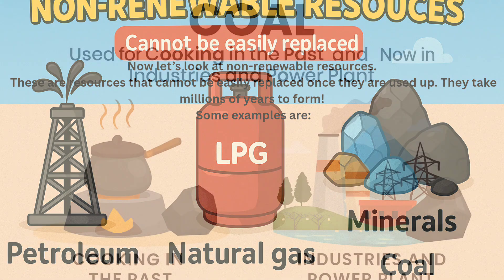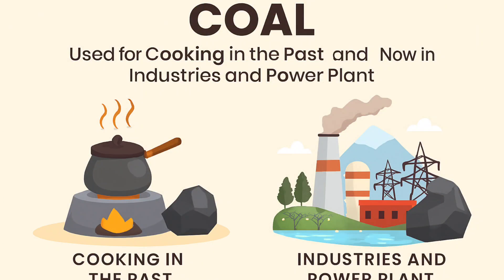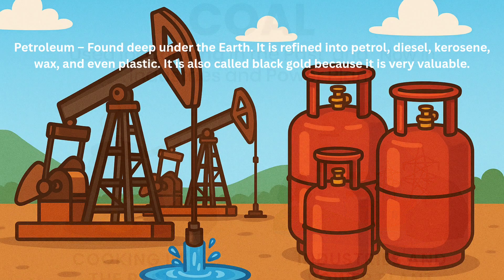Now let's look at non-renewable resources. These are resources that cannot be easily replaced once they are used up — they take millions of years to form. Some examples are coal, used for cooking in the past and now in industries and power plants, also called buried sunshine. Petroleum is found deep under the earth and is refined into petrol, diesel, kerosene, wax, and even plastic. It is also called black gold because it is very valuable.